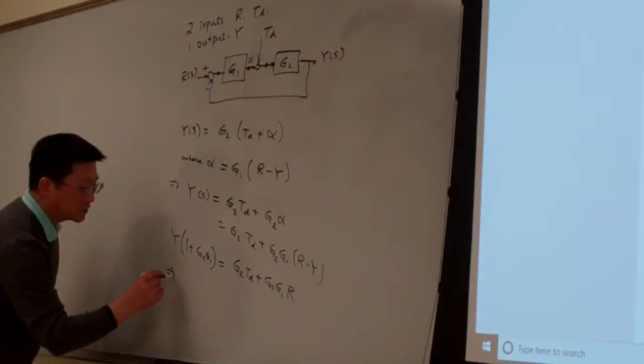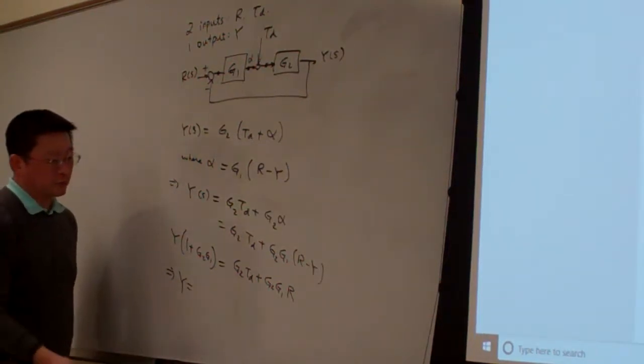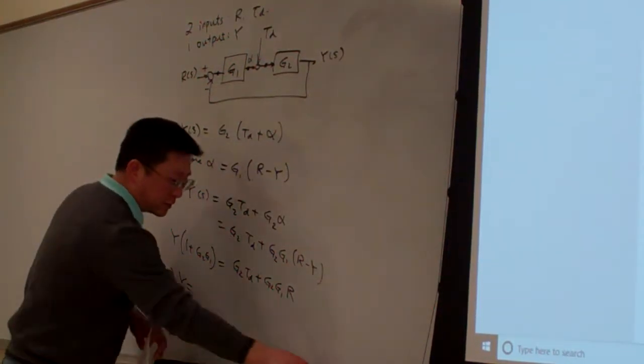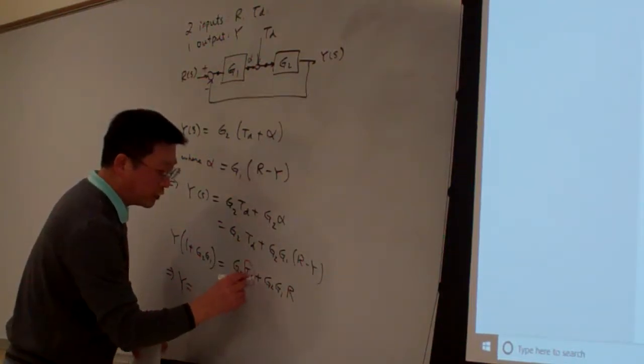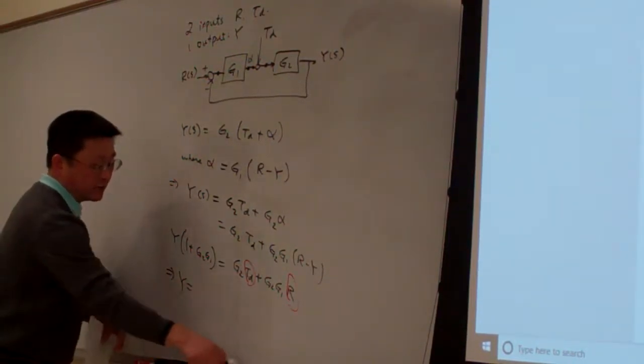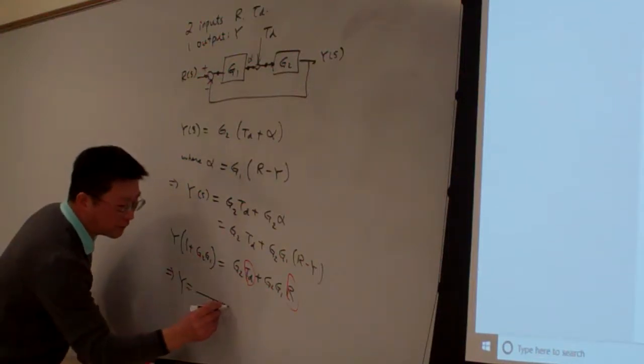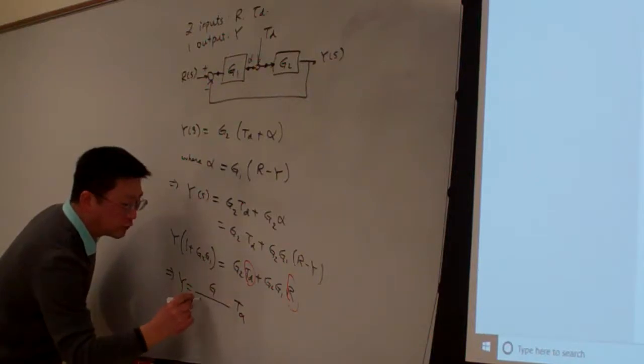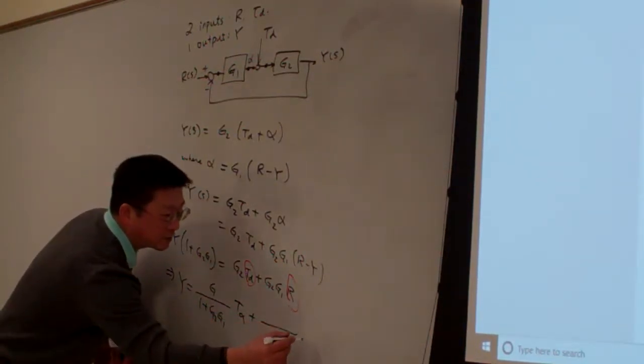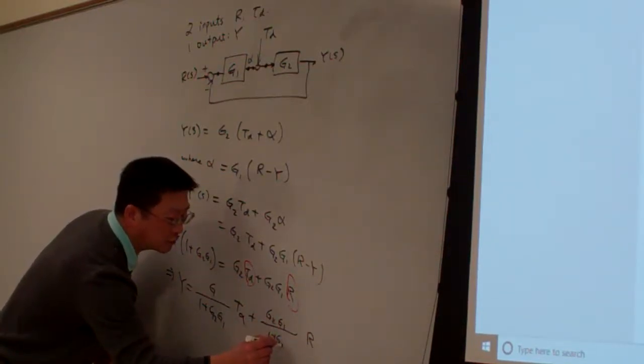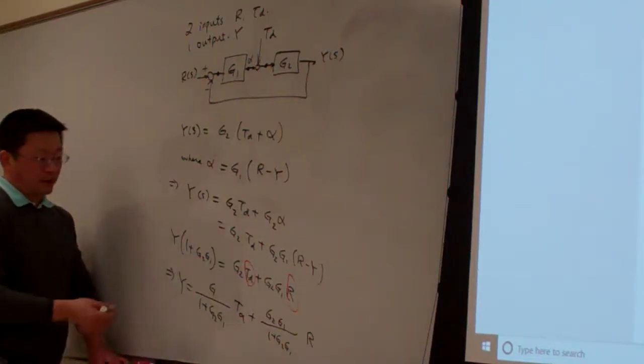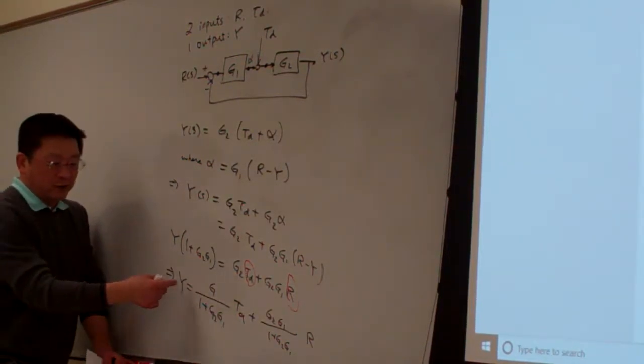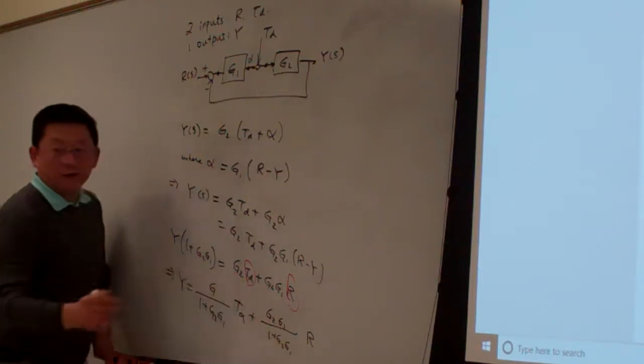Therefore, from here you can see Y will be equal to both of the things, the inputs here. By dividing both sides with this one, I can find the relation. So Y equals Td times G2 over 1 plus G2 G1, plus R times G2 G1 over 1 plus G2 G1. From here, this is the output. The output is related to individual inputs in this way.